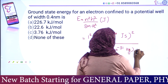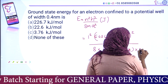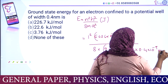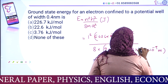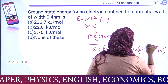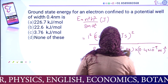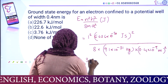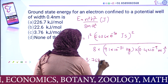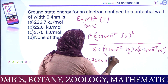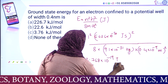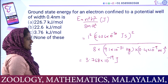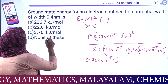n is equal to 1 for ground state. The length a is equal to 0.4 into 10 raised to minus 9 meters. We square that value of a. The intermediate answer is 3.768 into 10 raised to minus 19 Joules.